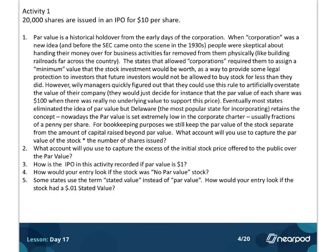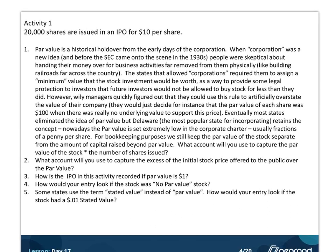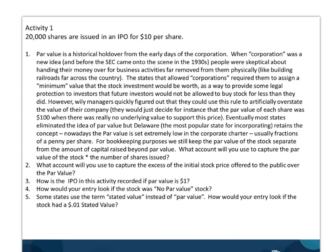Our first activity has to do with issuing shares — specifically, we're issuing common shares. We say they're issued in an IPO, which stands for Initial Public Offering. That's what we call it when a company issues stock to outsiders for the first time. We're going to issue these shares for $10 a share, meaning outsiders who want to buy a share have to pay $10 for each one.